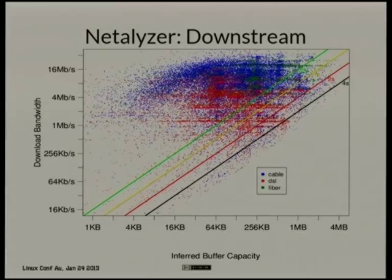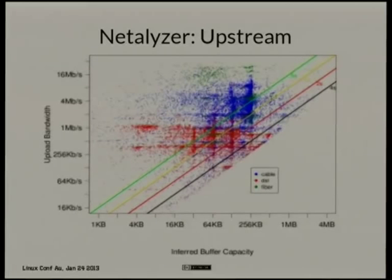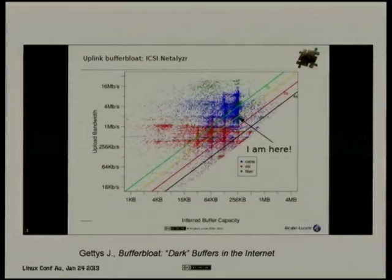The white region of the graph exists because the people who wrote the tool did not actually believe there would be anything that bad — so they threw those data points away. In the upload direction, they have the same thing. Jim Getty's demonstration on YouTube shows this more clearly.